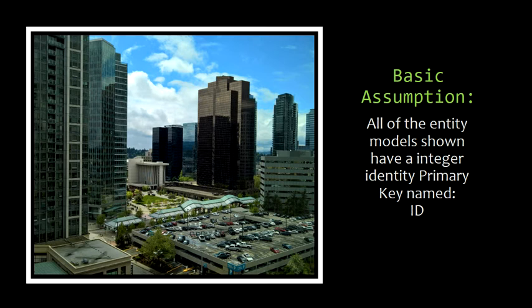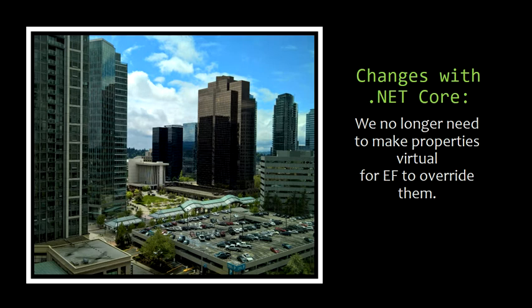The basic assumption is that most entities will have an integer primary key named ID - it just makes things easier. And just a change with .NET Core that caught me by surprise: that virtual keyword. Remember I said when we create navigation properties, we say virtual so they can be overridden. Well, with the new .NET Core, we don't have to say virtual anymore. Any framework core can override them without that keyword. It doesn't hurt if you have it there, but going forward I won't be using it. The advantage is if you copy-paste code between .NET Framework and .NET Core, it would still work, but whatever.